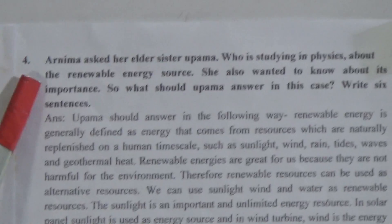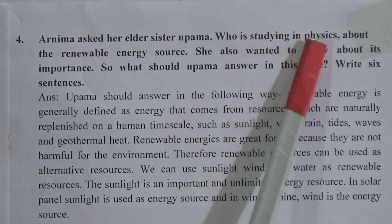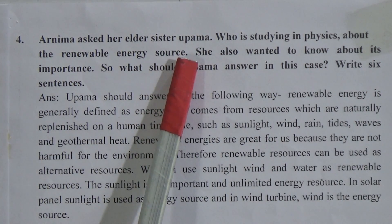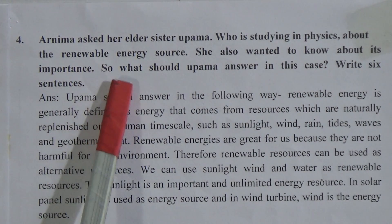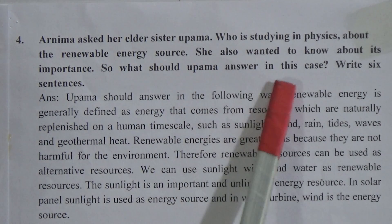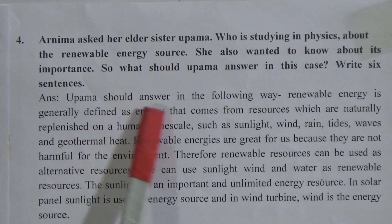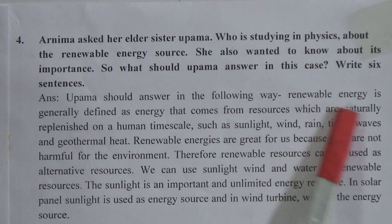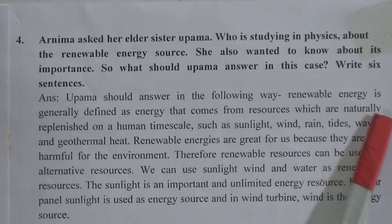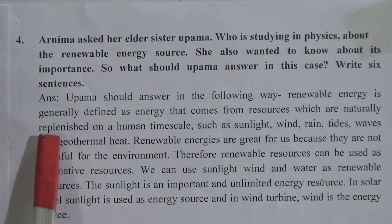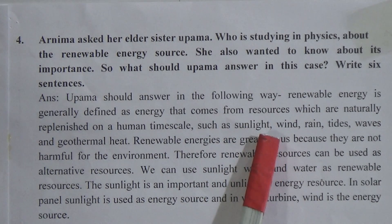Next question: Anyor asked her elder sister Upoma, who was studying physics about renewable energy resources. She also wanted to know about its importance, so what should Upoma answer? Write six sentences. The answer: Upoma should answer that renewable energy is generally defined as energy that comes from resources which are naturally replenished on a human time scale, such as sunlight, wind, rain, tides, waves, and geothermal heat.